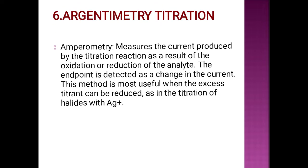The last type is amperometric titration. Amperometric titration uses an instrument called an amperometer to measure the current produced by the titration reaction as a result of oxidation and reduction of the analyte. The endpoint is detected as a change in current. This method is mostly useful for excess titrant reduction and for titration of halides with the silver cation. These are the six types of titration, differing by procedure and goals. Thank you for watching this video.